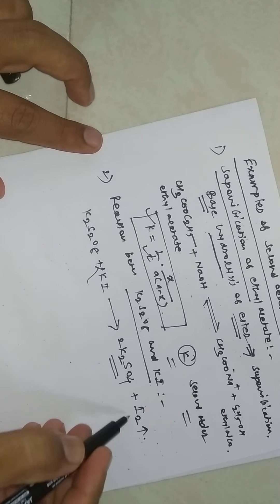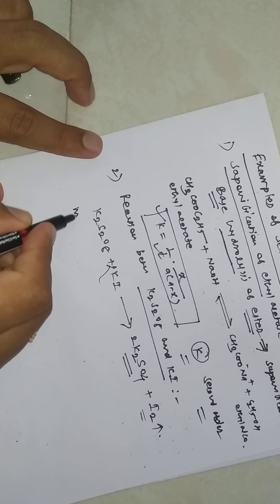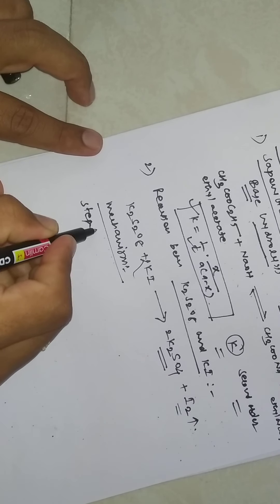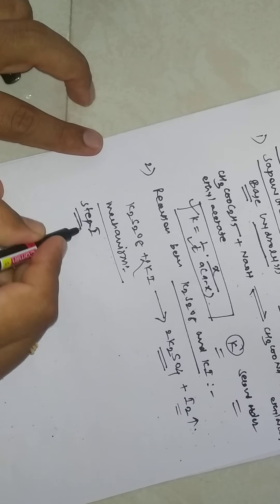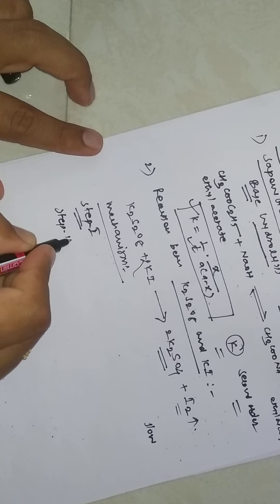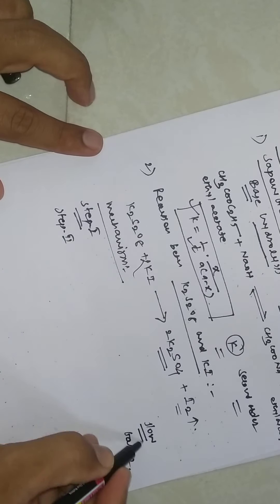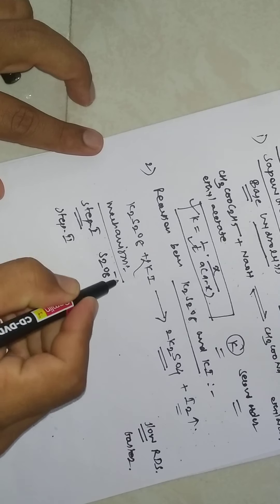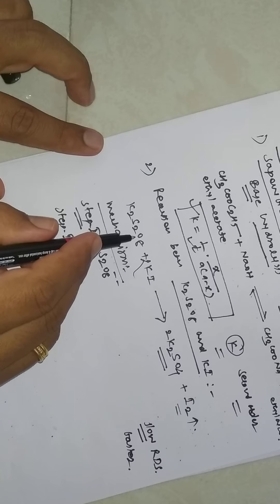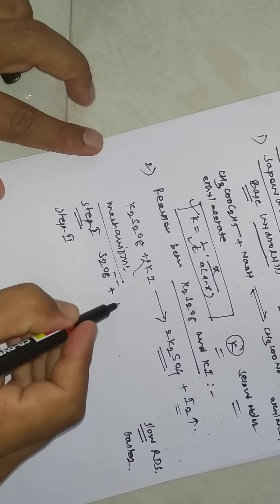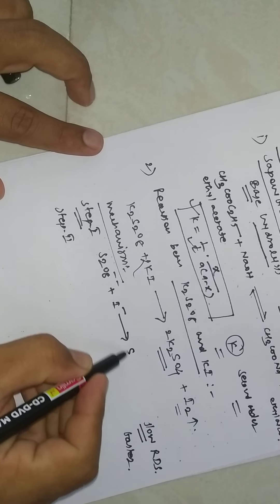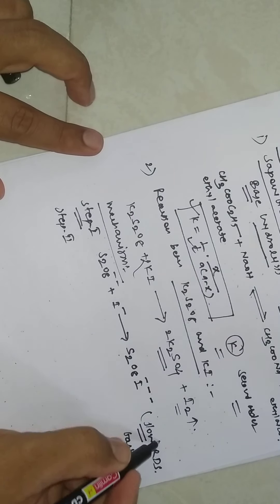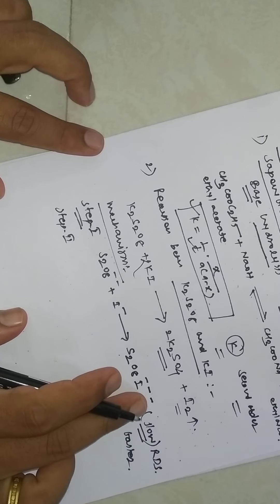If we see the mechanism for this reaction — how this reaction proceeds — there are two steps. Step one is the slow step and step two is the faster one. The slow step is the rate determining step (RDS). In step one, S₂O₈²⁻ reacts with I⁻ to form the intermediate S₂O₈I³⁻.